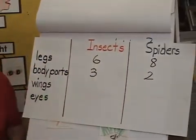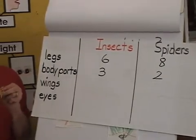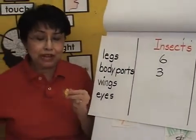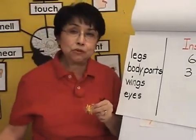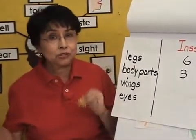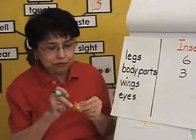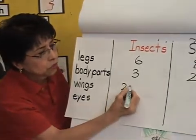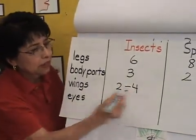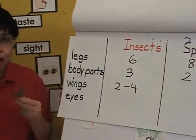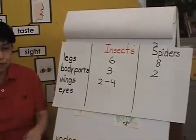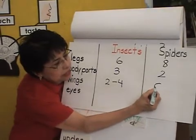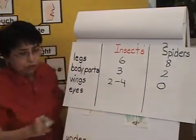Now let's look at wings. We can see that insects have wings — we studied this for the last two weeks — that insects do have wings. Some of them have two wings, some have four wings, two on each side. For example, the bee has four. So insects have between two to four wings. Do spiders have wings? No, spiders do not have wings. So we're going to say zero wings.